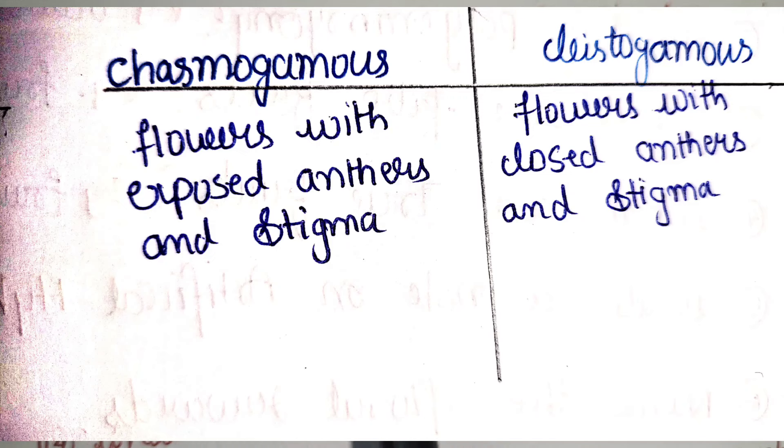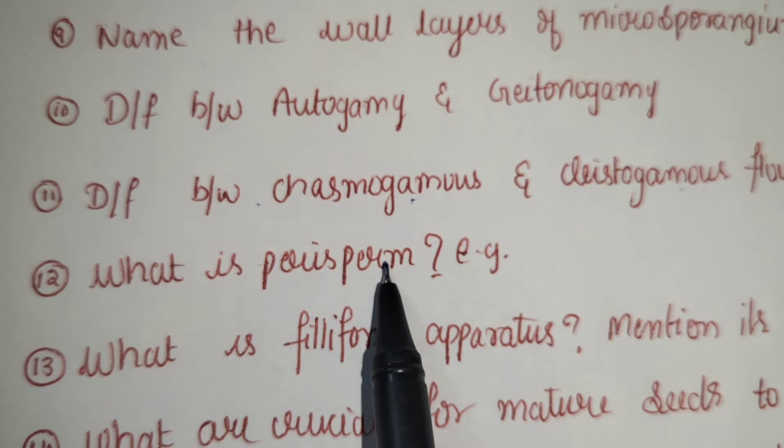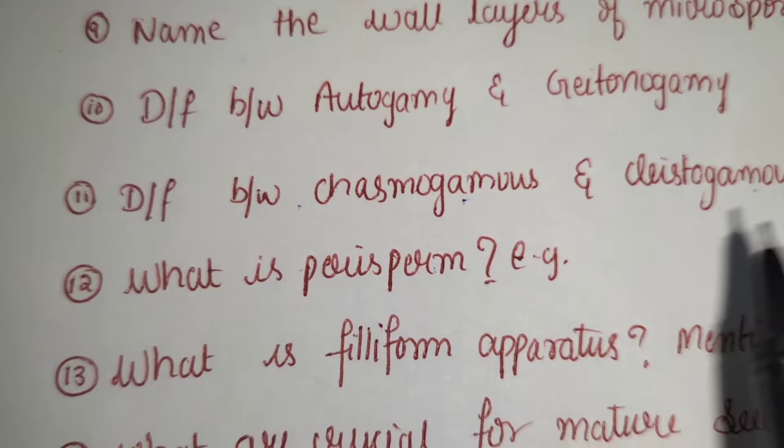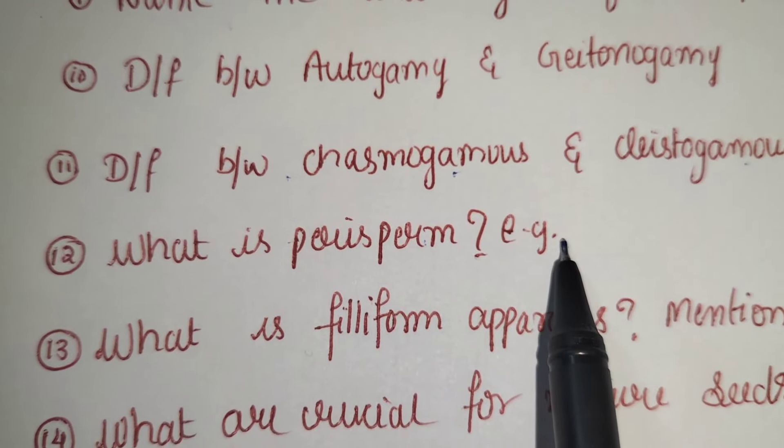What is perisperm? The residual persistent nucellus is called perisperm. Example: pepper and beet.